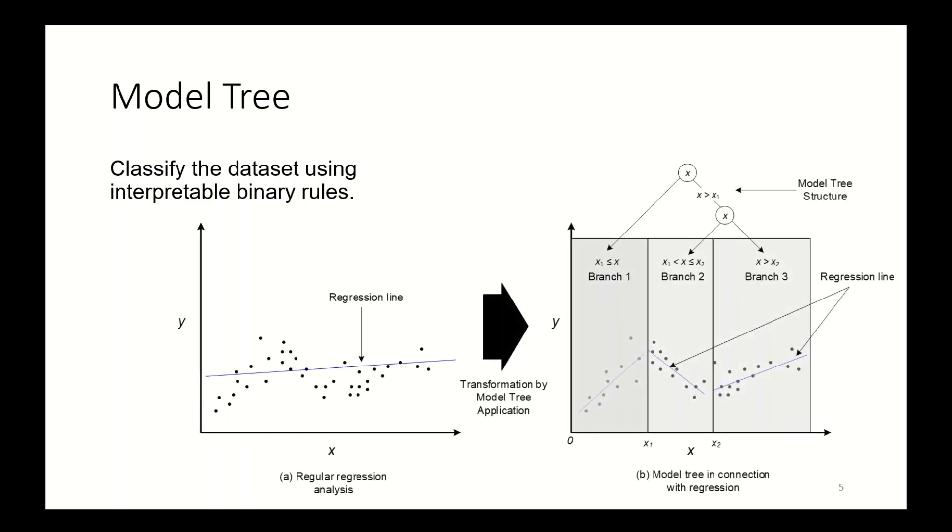Now, what is a model tree? A model tree breaks down the whole data set into small subsets appropriate for explaining the input-output relationship with regressions. Each subset is defined by a set of binary rules on top of the model input attributes. For this example, as shown in the previous slide, a non-linear data set is divided into three subsets. Each subset is defined by the range of values of input attribute x.